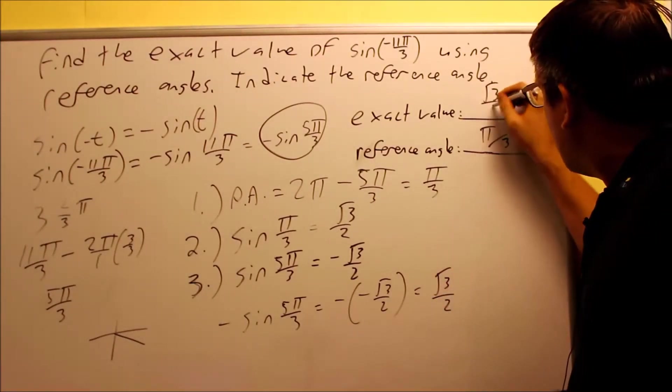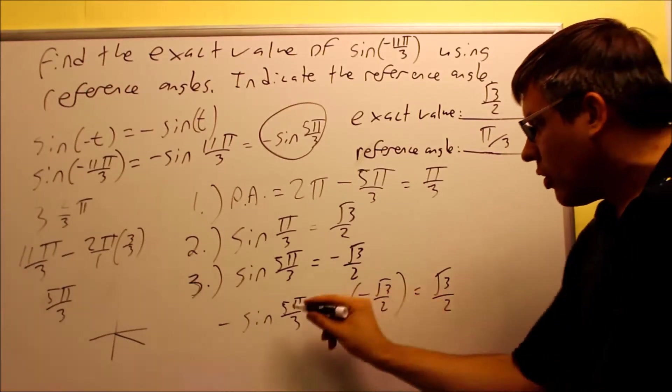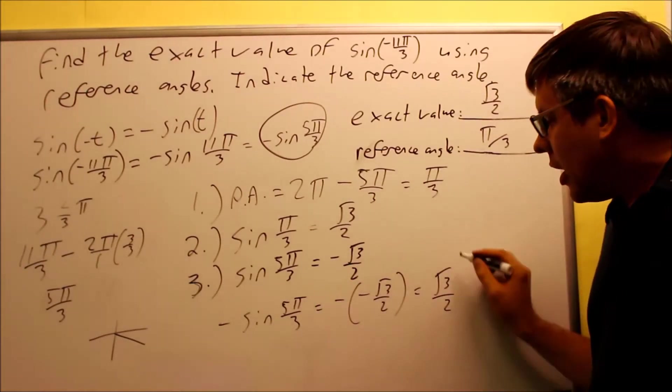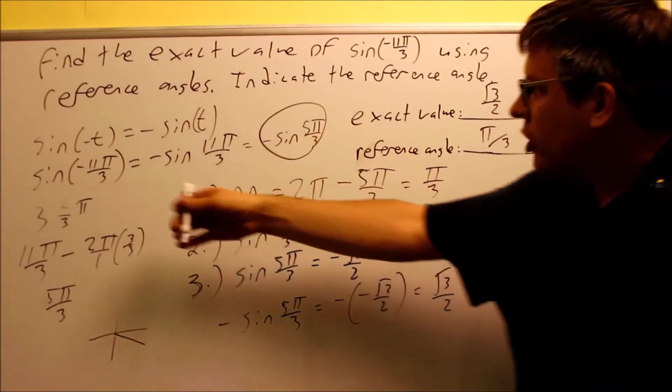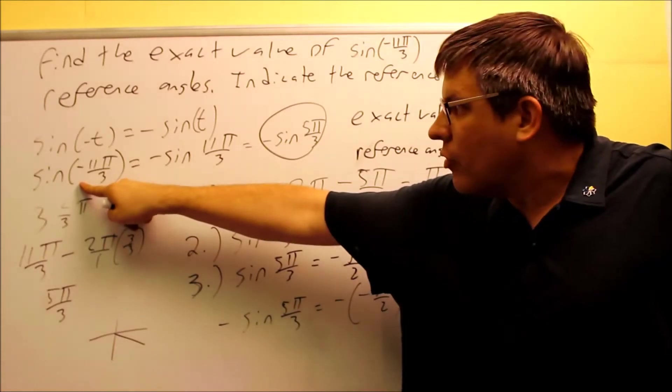It's going to be positive square root of 3 over 2. You've got to be really careful when you have these double negatives, but that would be your final answer. So we broke the problem down.